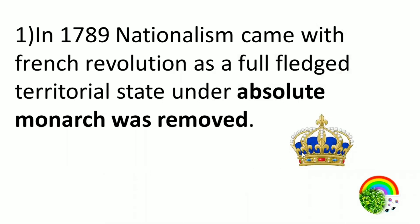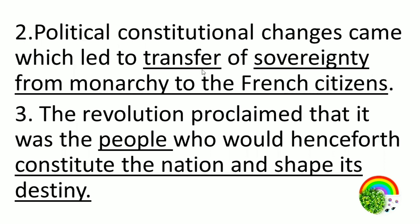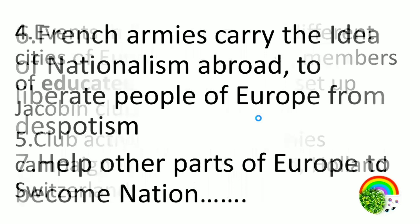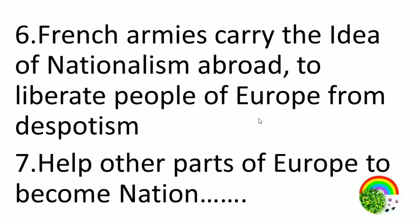Nationalism — love for the nation — came about and the absolute monarch was removed. Transfer of power: transfer of sovereignty from monarchy to the French citizens. People constitute the nation and would henceforth shape its destiny. Students and educated middle classes set up various clubs like Jacobin clubs. The French army's campaigns spread to Belgium, Holland, Switzerland, and Italy in the 1790s. French armies carried the idea of nationalism abroad to neighboring places and helped Europe move toward becoming nation states.